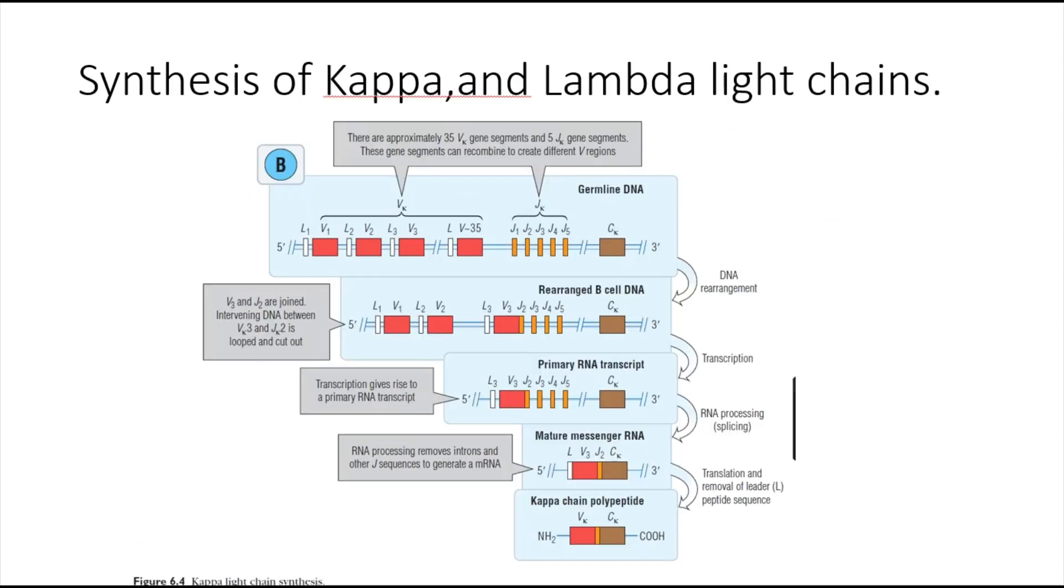Synthesis of kappa and lambda light chains is almost identical to heavy chain synthesis, except for a few differences. First, the D region or diversity segment is missing, so we only have V and J segments plus the constant region. That's why it's called a one-step process instead of a two-step process.